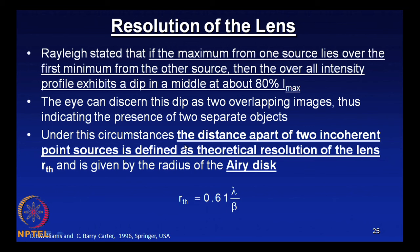The eye can discern this dip as two overlapping images, indicating the presence of two separate objects. Under these circumstances, the distance apart of the two incoherent point sources is defined as the theoretical resolution of the lens R_th. It is given by the radius of the Airy disc: R_th = 0.61 × λ / β, where lambda is the wavelength of the radiation and beta is the semi-aperture angle.